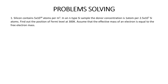Assume that the effective mass of an electron is equal to free electron mass. So what is to be noted? It is an n-type semiconductor. Carrier concentration is given in the problem, and also something is mentioned about the donor concentration — it is not directly given, we have to find it out. What is asked is to find out the position of Fermi level. Temperature is given and also effective mass of an electron is assumed to be free electron mass.